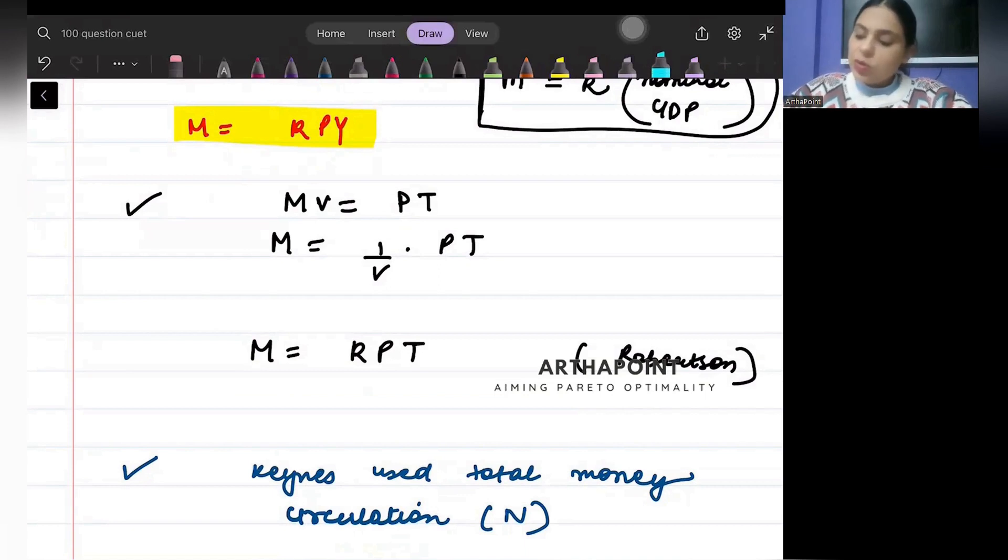Robertson did nothing - he said okay, you have this equation MV = PT, just the equation which Fisher had given, but he just took V on the other side and called it some proportion.